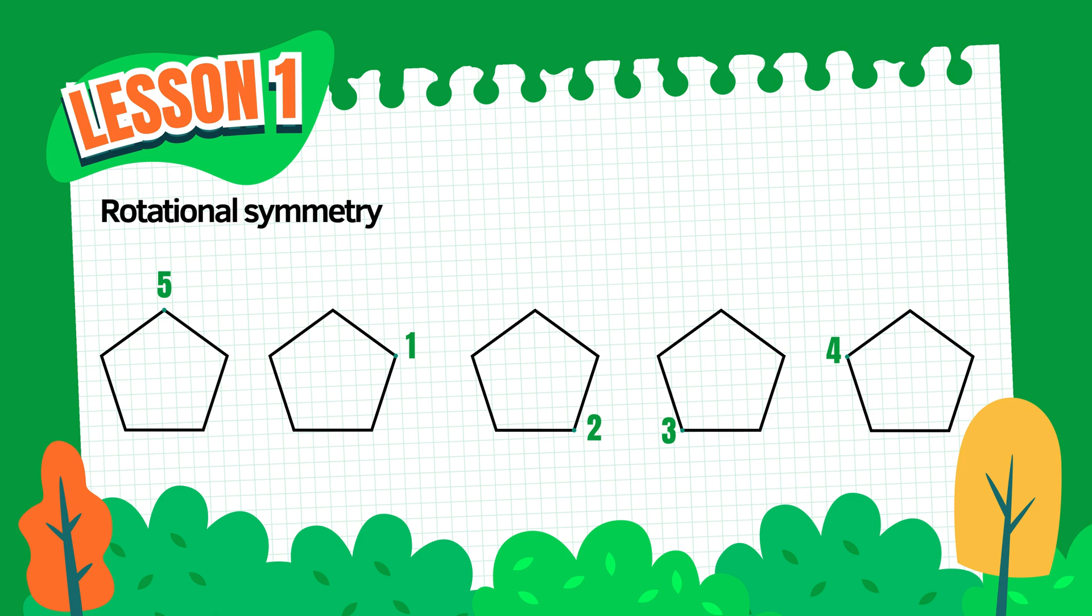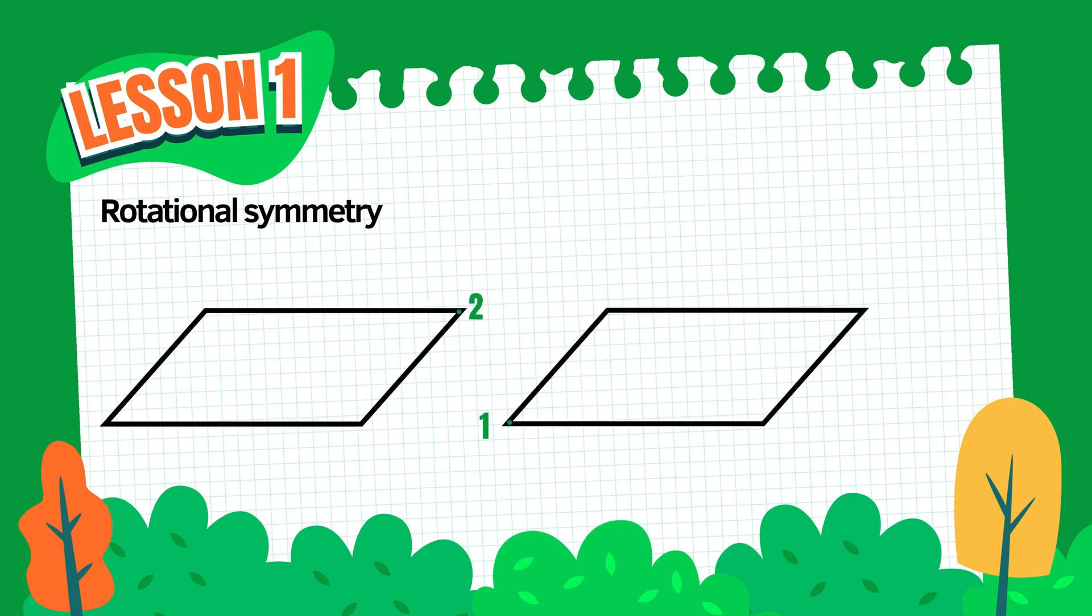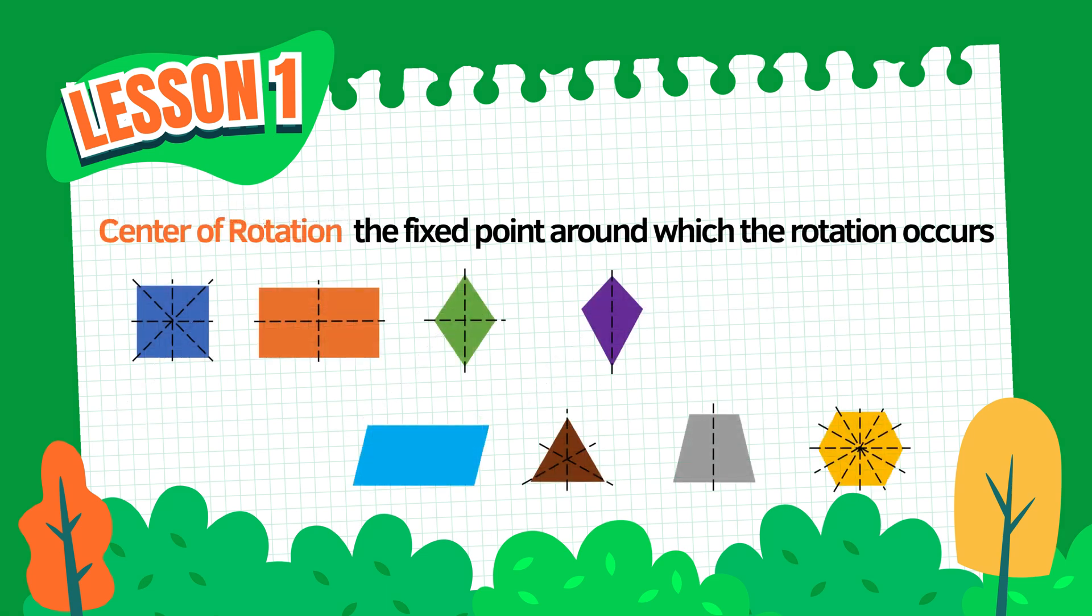Now look at this parallelogram. It only looks the same twice in a full rotation: once at zero degrees and again at 180 degrees. So its rotational symmetry is order two. Remember, the order of rotational symmetry tells us how many times a shape matches itself when we rotate it in a full circle.